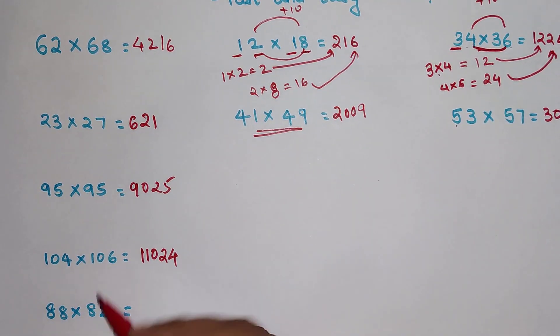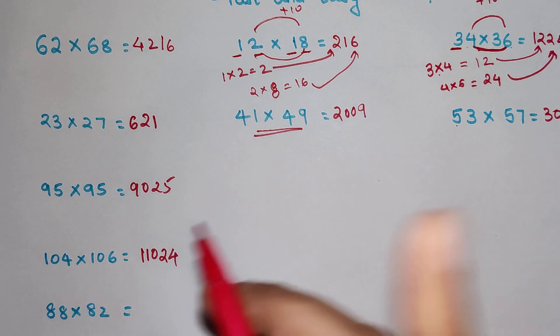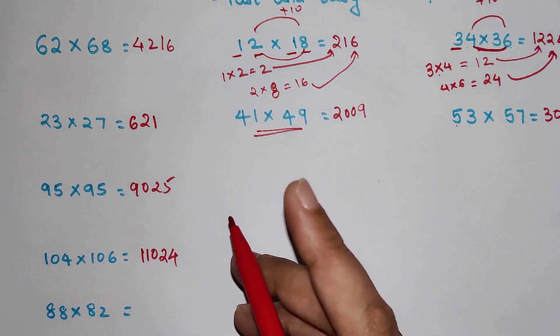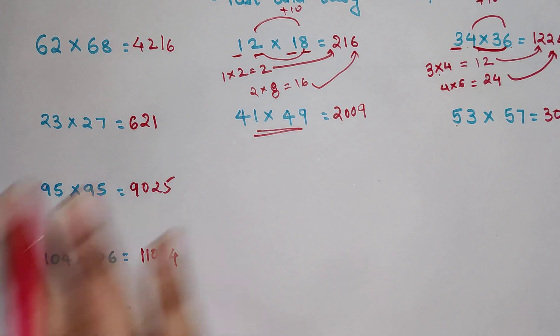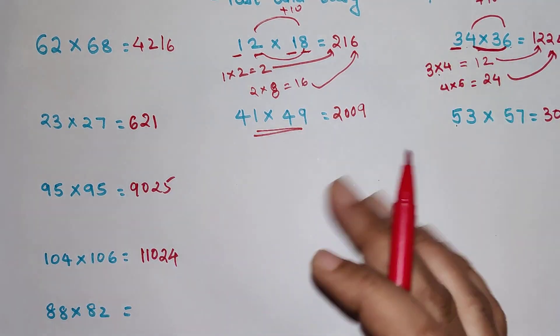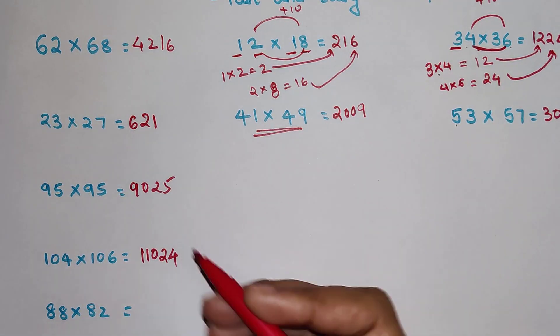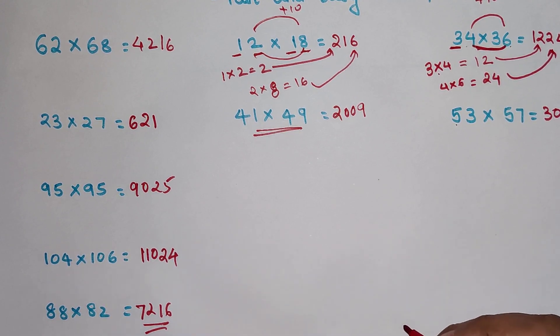So now over here. Students don't forget at the end of this video I am going to put up a DIY question. Whose answer you can mention in the comment section. I will definitely tell you whether you are right or wrong. The question will be on this same concept only. So 88 into 82 that will get you 8 into 9 gets you 72. 8 into 2 gets you 16.